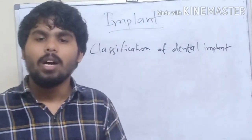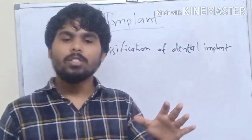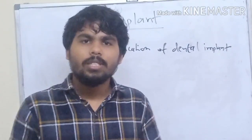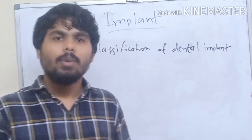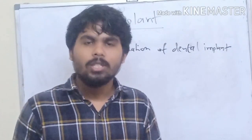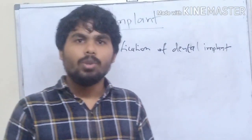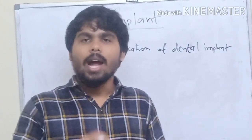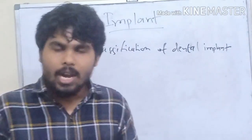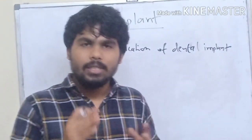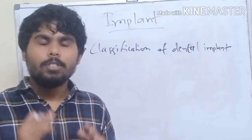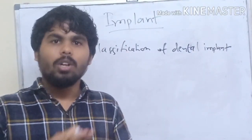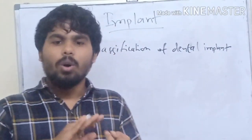On the basis of materials used, implants can be metal and metal alloys such as titanium and its alloys, tantalum, or chromium-cobalt-molybdenum alloys. Others include polymers, carbon, and ceramics. Based on surface, implants can be smooth, textured, coated, or machined.